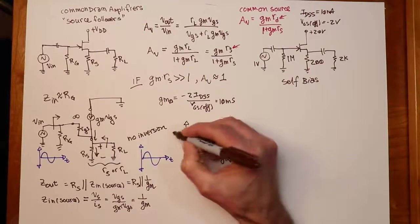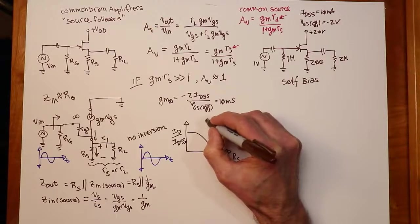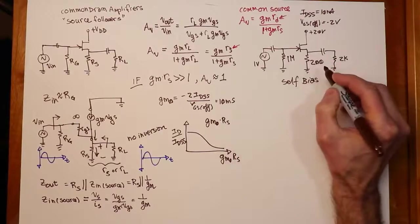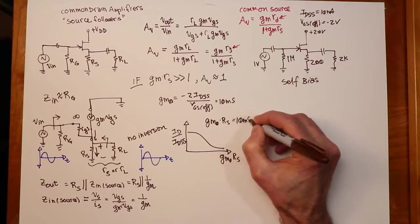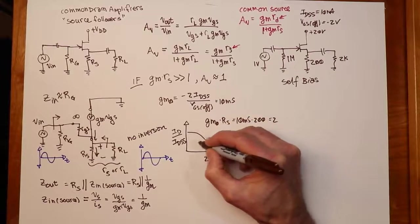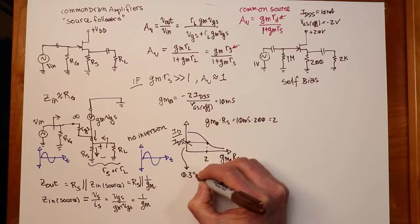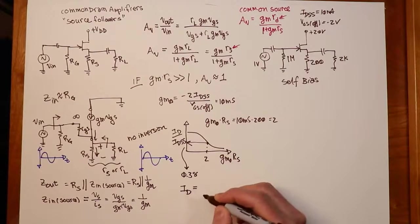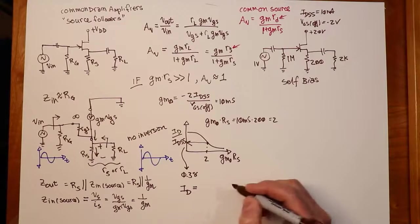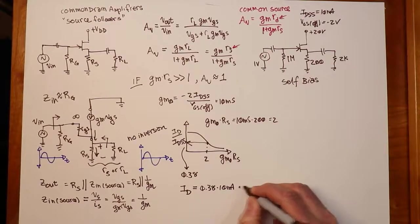The self-bias curve looks something like this. We've got GM0*RS on this axis, and then the ratio of ID to IDSS over here. So the GM0 we just found to be 10 millisiemens, RS, this is a bias value, notice the uppercase, so that's the 200 ohm. That's going to be 10 millisiemens times 200 ohms, 0.2k ohms, so that's going to get us 2. So we have to bring that up, bring it across, and the value of ID over IDSS is 0.38, 38%. So ID would have to equal 0.38, 38% of IDSS.